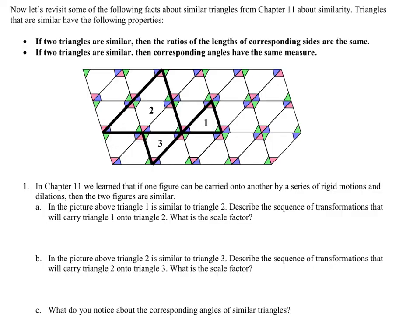Now let's revisit some facts about similar triangles from chapter 11 on similarity. Triangles that are similar have the following properties: if two triangles are similar, then the ratios of the lengths of the corresponding sides are the same, and if two triangles are similar, then corresponding angles have the same measure automatically.